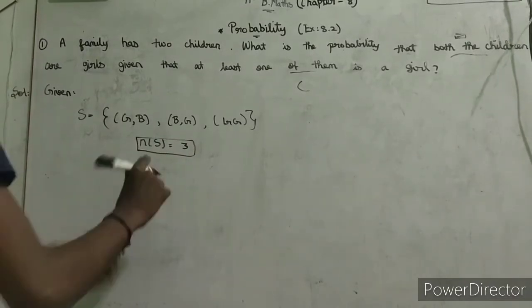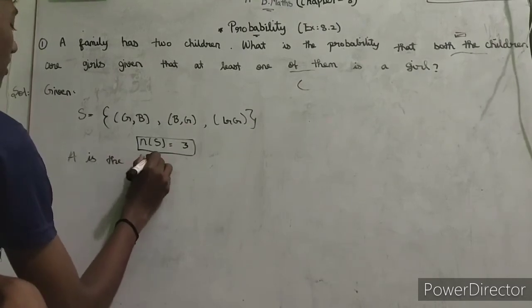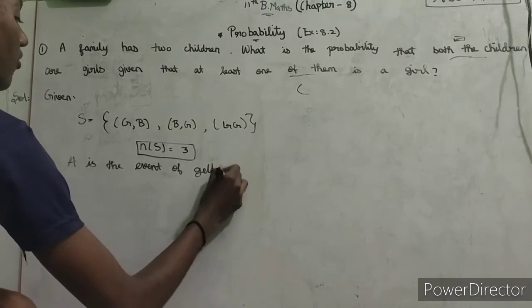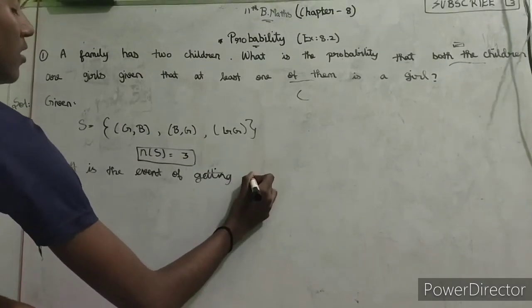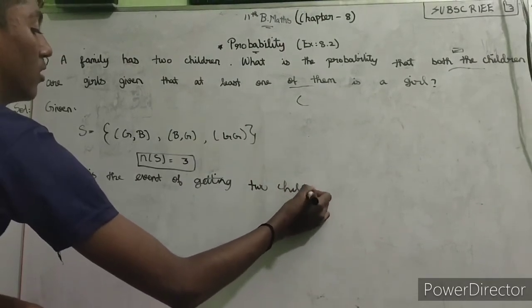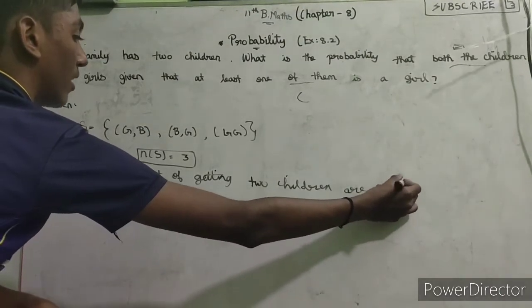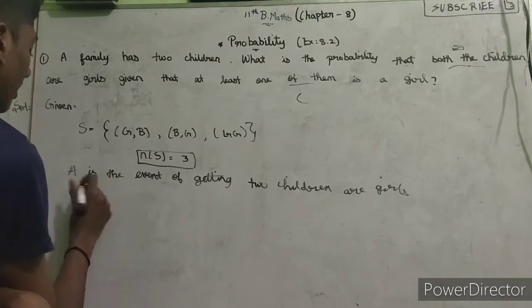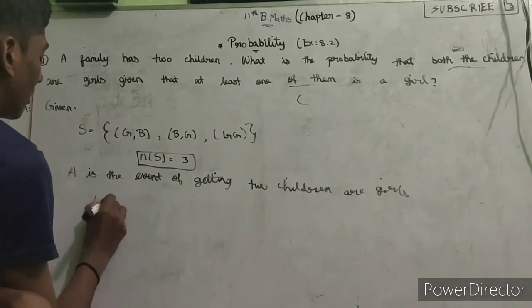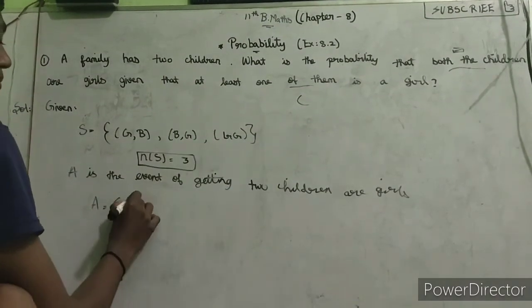Now what is the event? What is the event of getting two children who are girls? That's why we can say the event A is two girls are girls. So A equals (G,G).